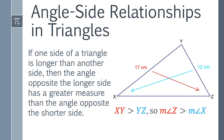If one side of a triangle is longer than another side, then the angle opposite the longer side has a greater measure than the angle opposite the shorter side. In this diagram, the length of segment XY is 17 and the length of segment YZ is 12. Since XY is longer than YZ, we can say with certainty that the measure of angle Z is greater than the measure of angle X.